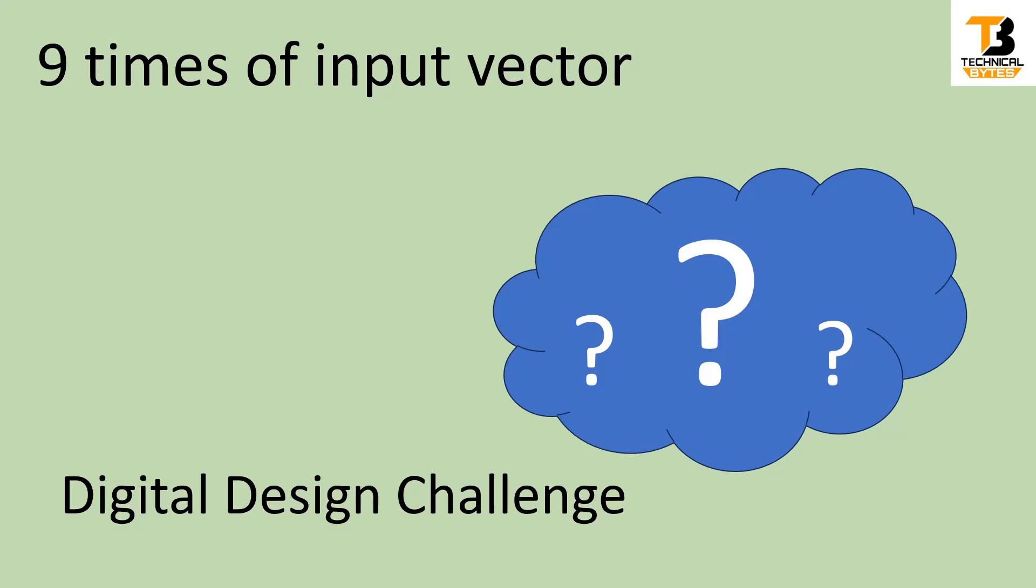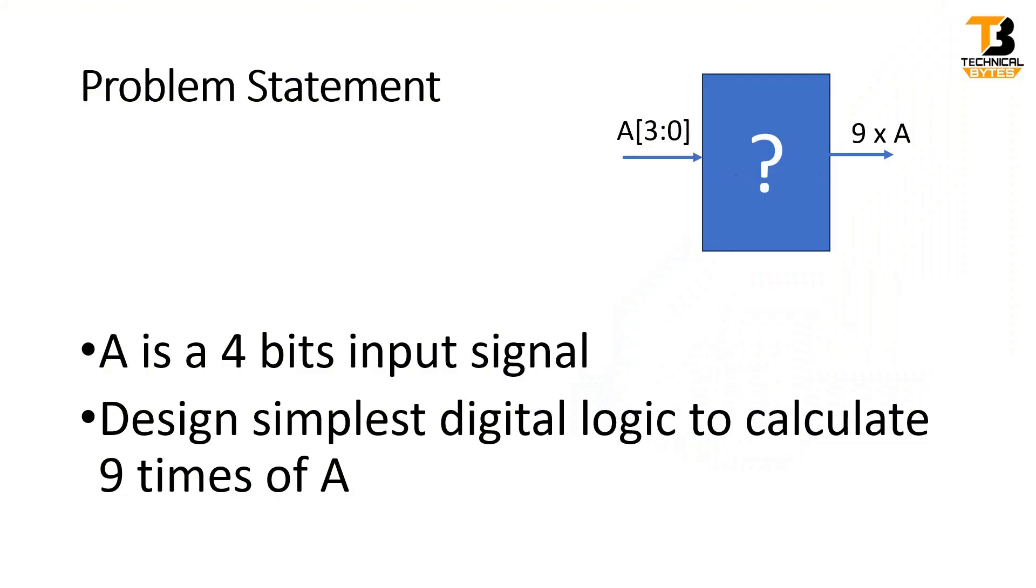Now without wasting much time, let's get started and see what the problem statement is. The problem statement is very simple. You have to design a combinational logic. Its input is a vector A, which is of four bits, and the output should be nine times A. The condition here is that the design you create should be the simplest digital logic to calculate nine times A.